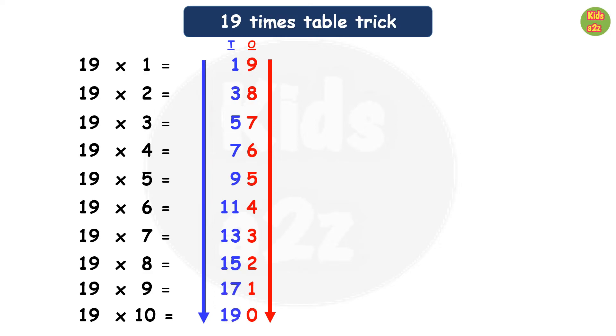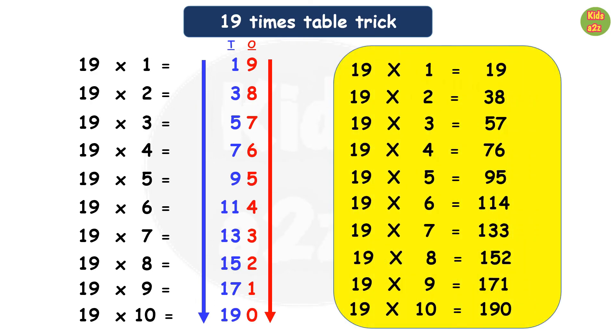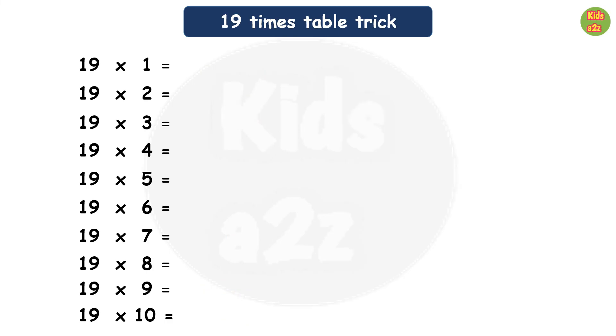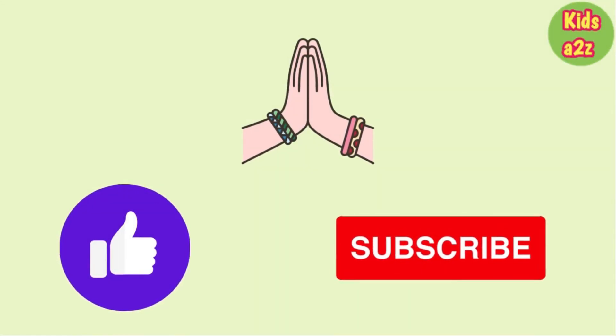Now if you take a look, you have the 19 times table. This is a really easy and simple way to learn the 19 times multiplication table. Thanks for watching Kids A to Z.